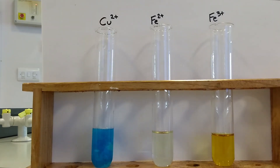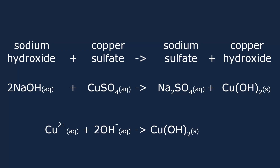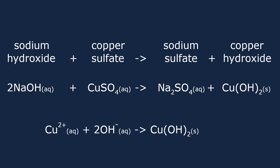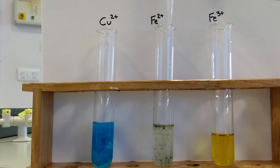The blue precipitate forms due to the reaction between the aqueous Cu²⁺ and hydroxide ions to form the insoluble solid copper(II) hydroxide. When sodium hydroxide solution is added to iron(II) sulfate, a green precipitate forms.